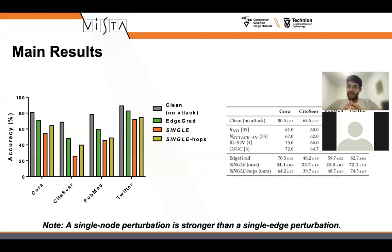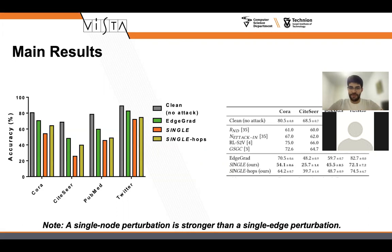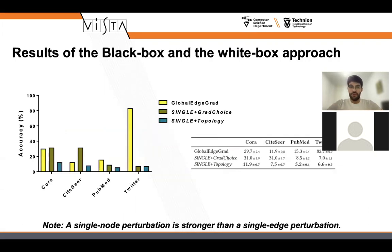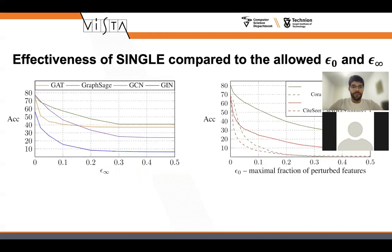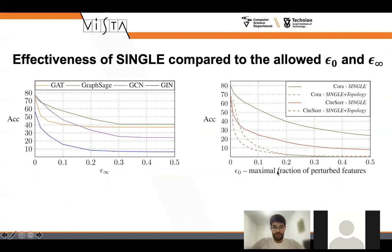Our main result is that a single edge perturbation and a single node perturbation can be more devastating than multiple edge or multiple node perturbations, as long as you perturb in the direction of the gradient (or opposite direction for targeted vs. non-targeted attacks). The white box and black box results also show that our models do not hold significant accuracy against these attacks. We also conducted a thorough ablation study on the L-infinity and L-0 norms and across different GNNs — as expected, giving more power to the attack (higher epsilon) makes it stronger.